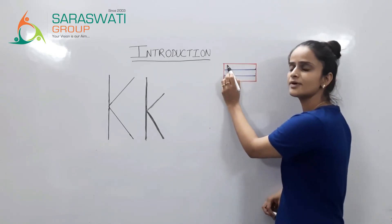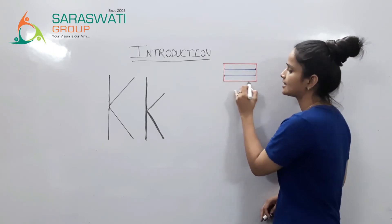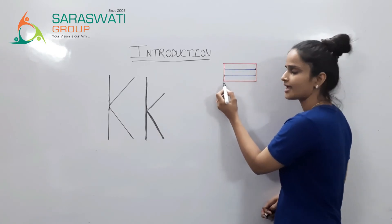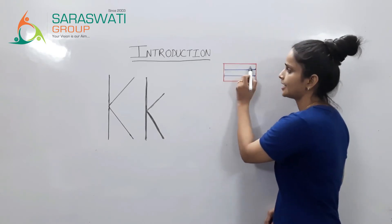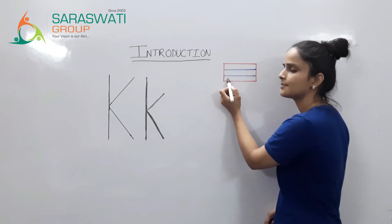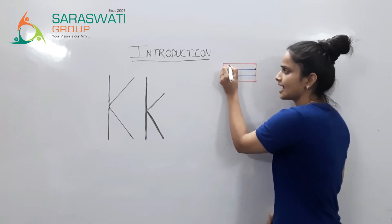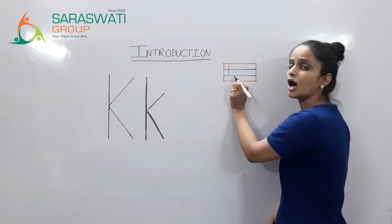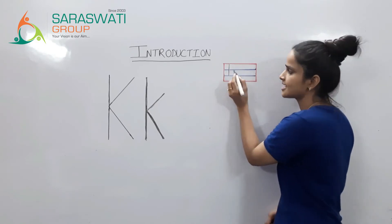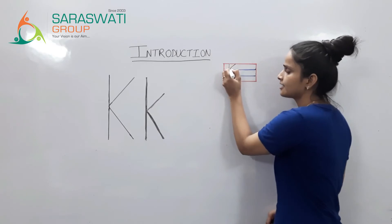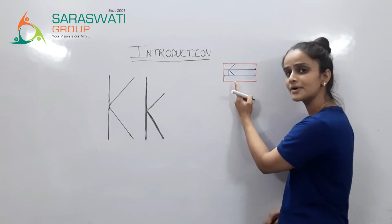Which line is this? This is our top line. This is our first base line. This is second base line and this is the bottom line. Now, we will write the uppercase K over here and then lowercase k. Uppercase K starts from the top line and ends at the second base line — standing line, then slant line and again slant line. Uppercase k.